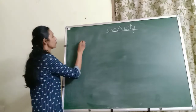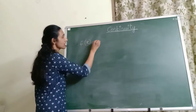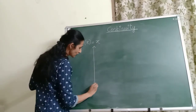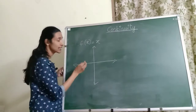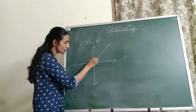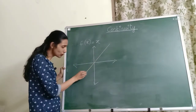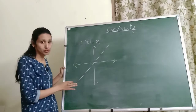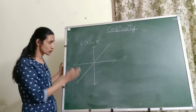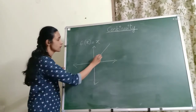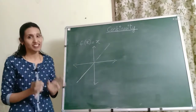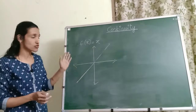For example, you must have all come across the function f(x) = x — it's the identity function. If I draw the graph of that function, you will see that it will be a straight line passing through the origin. As I'm drawing the graph of this function, I'm able to draw it without lifting the chalk from the board. There is no break, there is no interruption at all — it's continuous. So by looking at this graph, I can clearly say that this function is continuous everywhere.